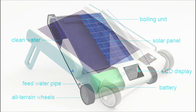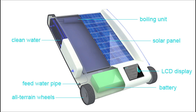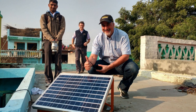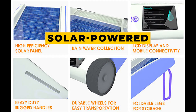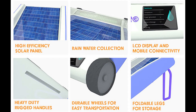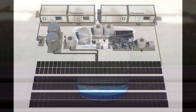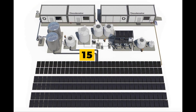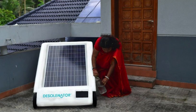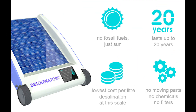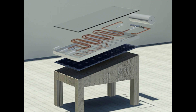The Desalinator is a leading technology that successfully addresses water scarcity while stressing sustainability. This solar-powered desalination device produces clean drinking water by purging water of 99% of impurities. It can create about 15 litres of fresh water every day, and its portability allows for use in a variety of settings. The Desalinator is unique in that it has a remarkable 20-year lifespan, making it a robust and reliable solution.